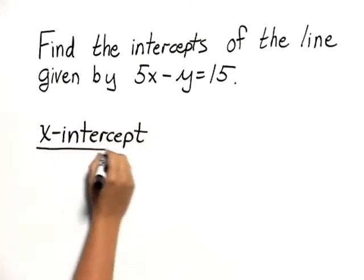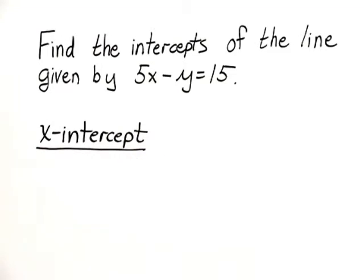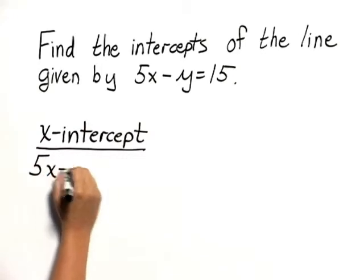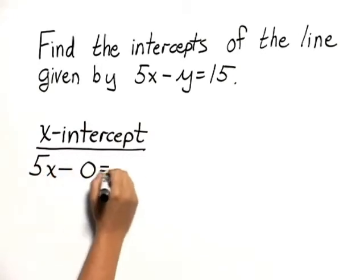At the x-intercept, the y-value will be 0, so let's substitute 0 for y. We have 5x minus 0 equals 15.